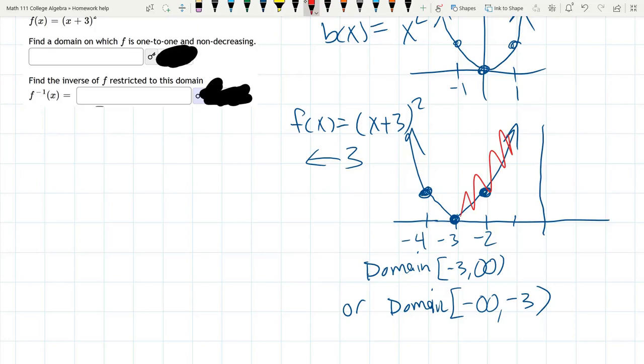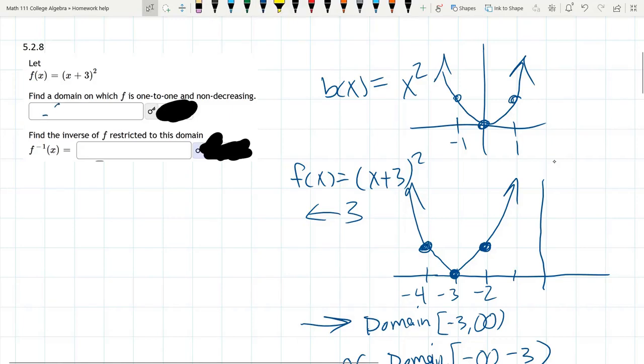Either way, you're going to get a one-to-one function. You can choose which one you want. I believe the question is set up to accept either one of those choices. I'm going to go with this choice here, [-3, ∞). So find the inverse restricted to this domain.